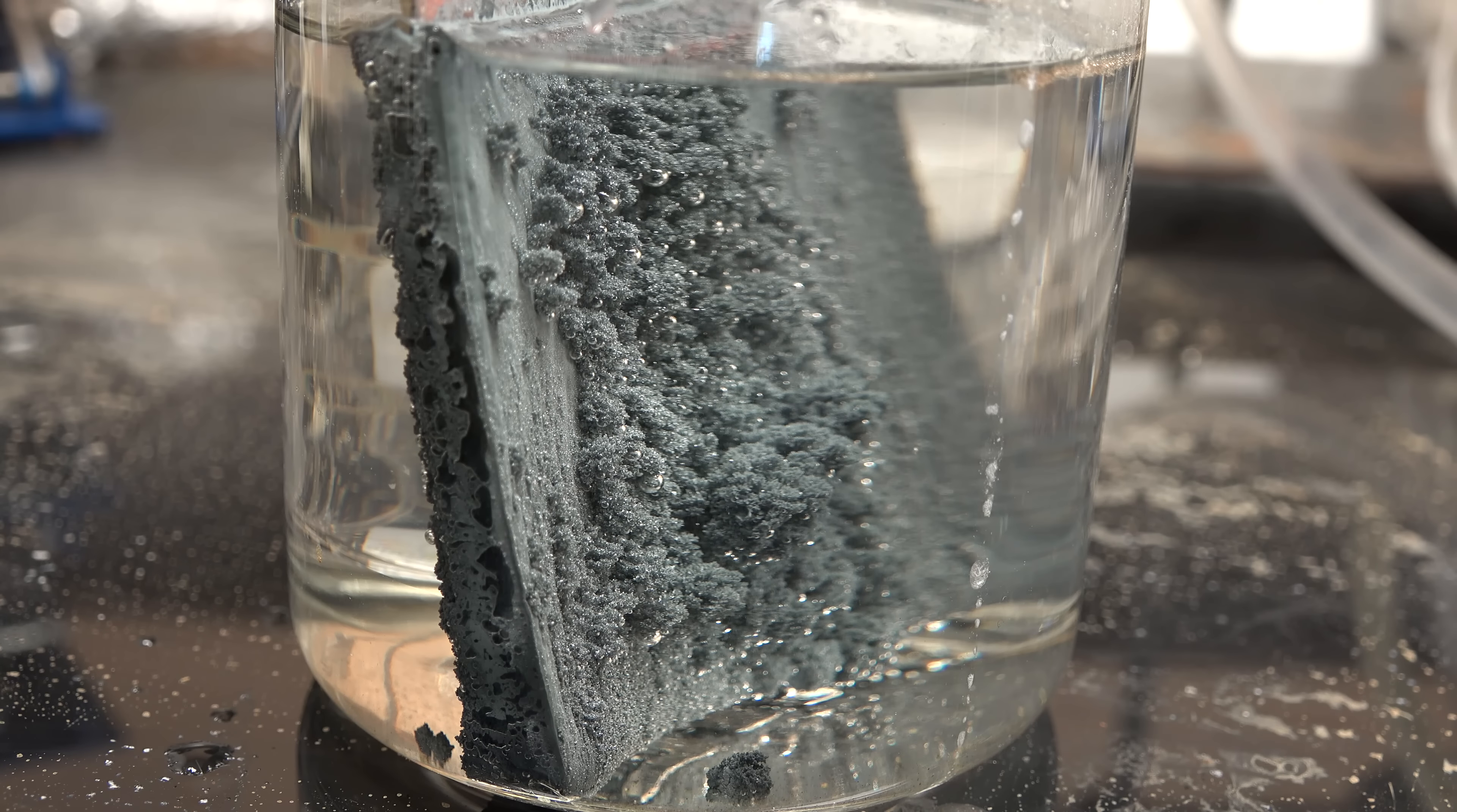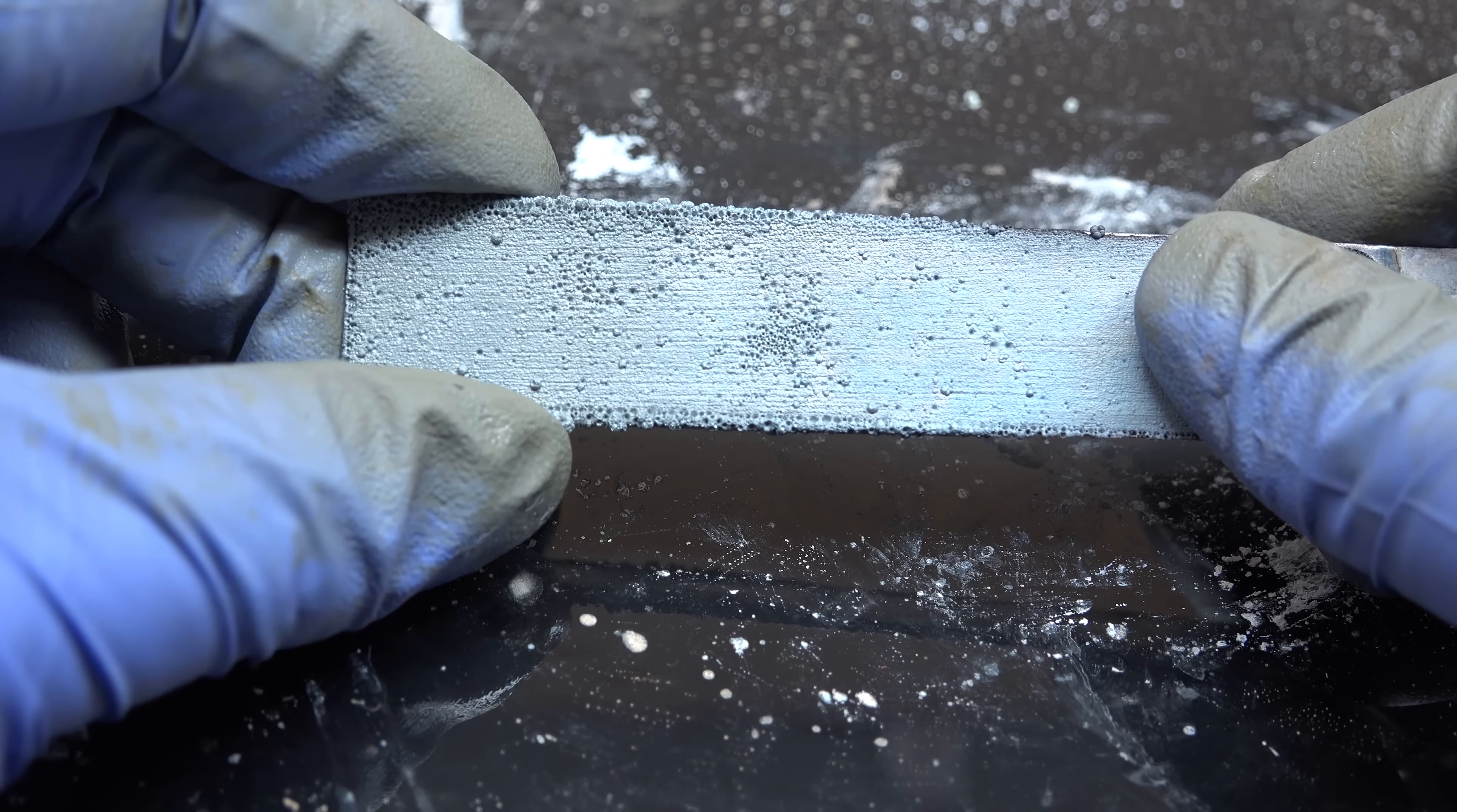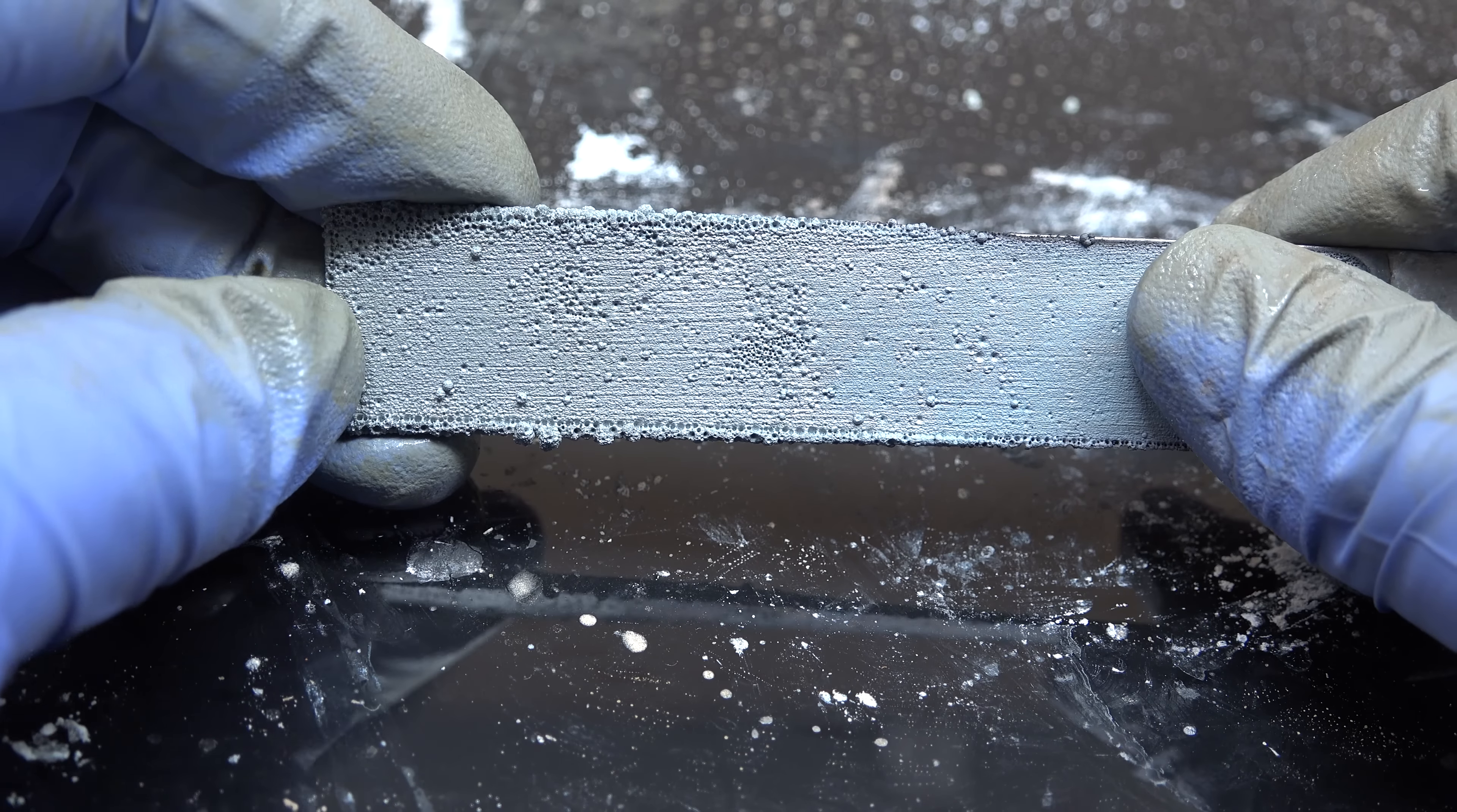this alkaline zincate process only produces zinc powder. If you want a strong and solid zinc plate you'll need to use an acid sulfate process. I'll be demonstrating that in my next video.